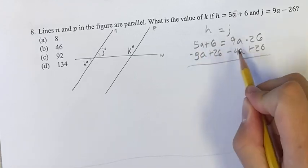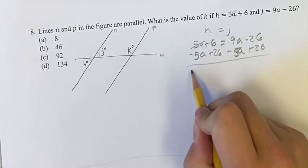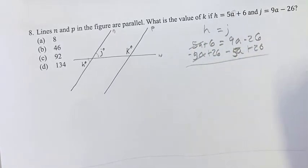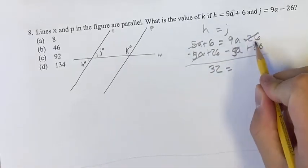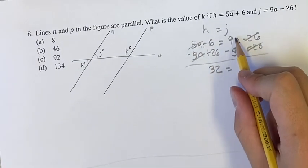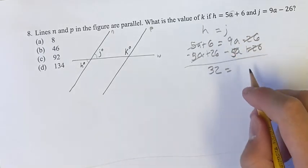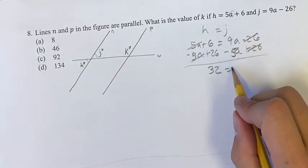Sorry, subtracting 5a from both sides because we want to get a's removed from this side. We're left with 6 plus 26 is 32. These cancel, these cancel. And then 9a minus 5a, not 9a minus 4a. So 9a minus 5a is equal to 4a.